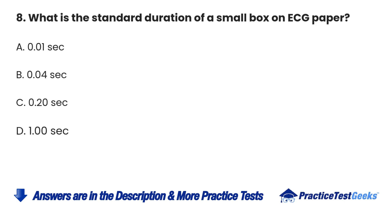8. What is the standard duration of a small box on ECG paper? A. 0.01 seconds. B. 0.04 seconds. C. 0.20 seconds. D. 1 second.